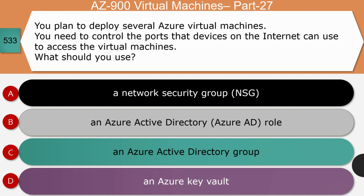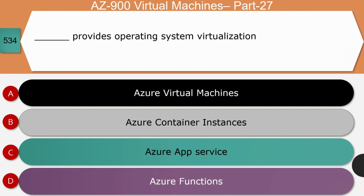Question 13: You plan to deploy several virtual machines and need to control the ports that internet devices can use to access those VMs. What should you use — Network Security Group, Azure Active Directory, Azure Active Directory Group, or Azure Key Vault? The right answer is Network Security Group. NSG works like a firewall; you can attach it to a virtual network, individual subnets, or a network interface assigned to a VM. Azure AD, Azure AD Group, and Azure Key Vault are not related to this use case.